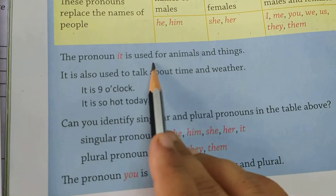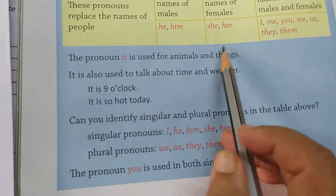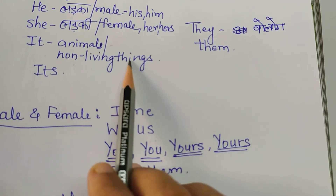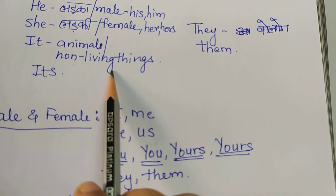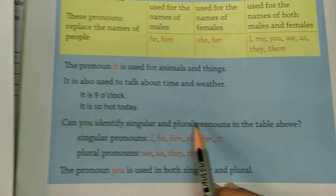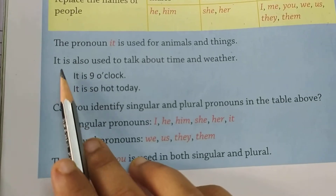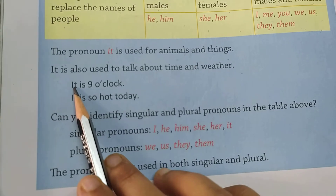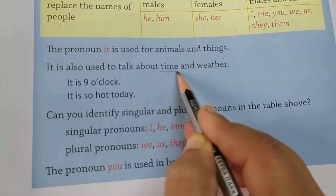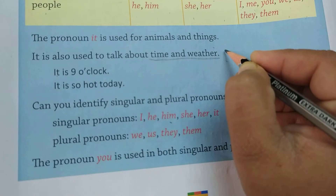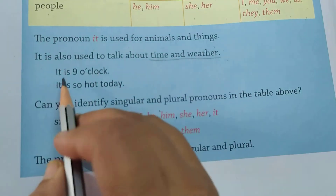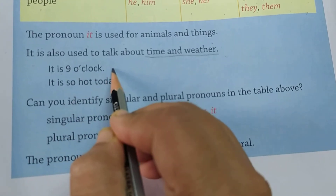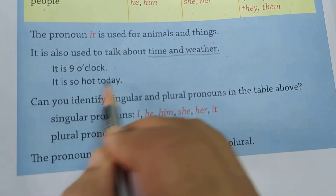The pronoun 'it' is used for animals and things. It is also used to talk about time and weather. For example: It is 9 o'clock. It is so hot today — aaj kitni garmi hai?